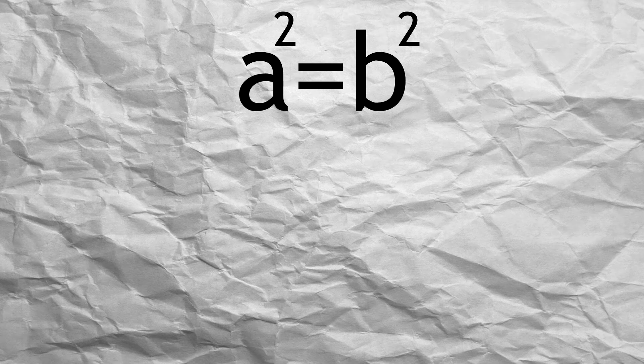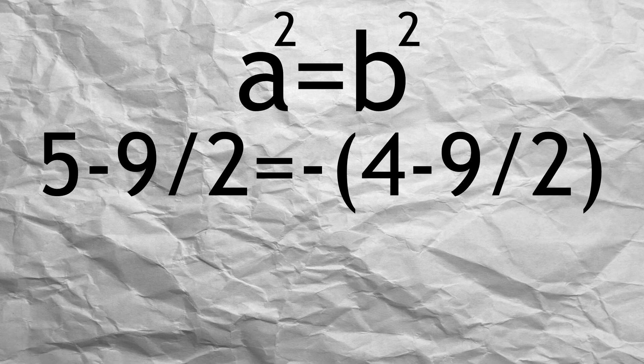Which is not the case here. In this case it implies A equals negative B and should read 5 - 9/2 equals 4 - 9/2, which by adding 9 division 2 on both sides correctly reduces to 5 equals 5.